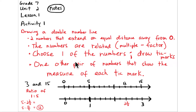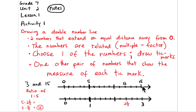When you draw a double number line, look at the two numbers that are related and are farthest from zero. In the example I drew below, those are 15 and 3. They should be an equal distance from zero, and they are related — 15 is a multiple of 3, and 3 is a factor of 15, a multiple-factor relationship.